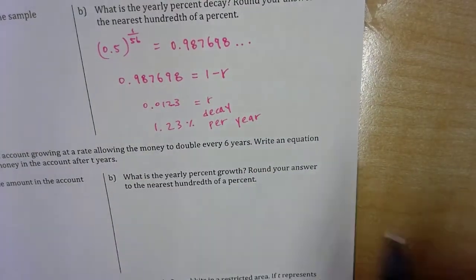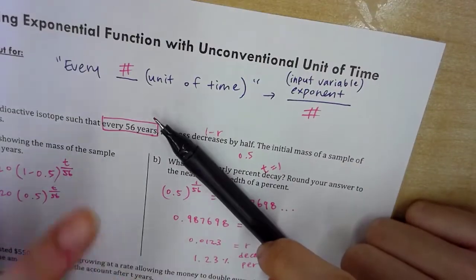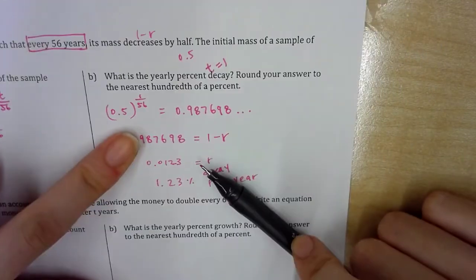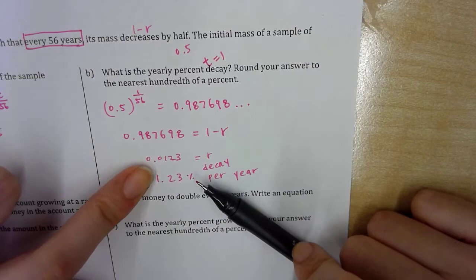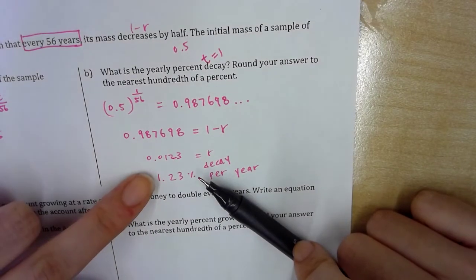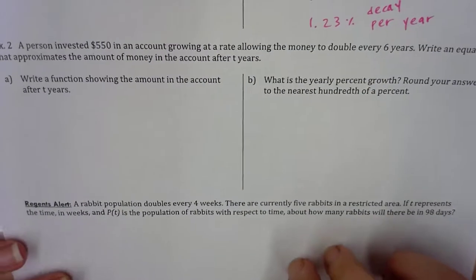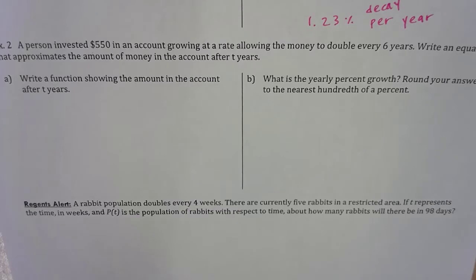So let's roll back. This makes sense because think about it: every 56 years, I lose 50%. So every year, the percentage I'm losing must be smaller than 50% for sure. Example two: why don't you pause the video and then try it by yourself.